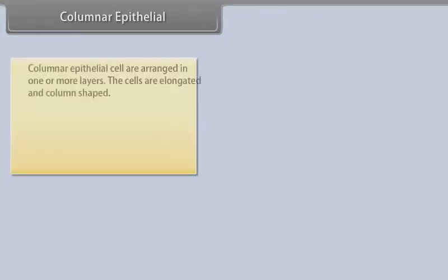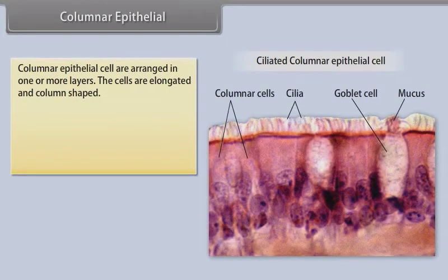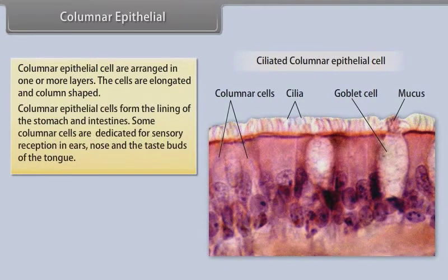Columnar epithelial cells are arranged in one or more layers. The cells are elongated and column-shaped. Columnar epithelial cells form the lining of the stomach and intestines. Some columnar cells are dedicated for sensory reception in the ears, nose, and the taste buds of the tongue.